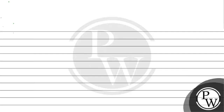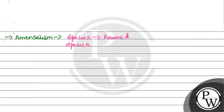Option number A हमें given है which is amensalism. So amensalism क्या होता है? Amensalism हमारा एक और type का species interaction होता है. इसमें generally क्या होता है कि हमारी एक species होती है वो harmed होती है, and एक species होती है वो हमारी unaffected होती है. मतलब कोई harm नहीं हो रहा, वो basically unaffected है.